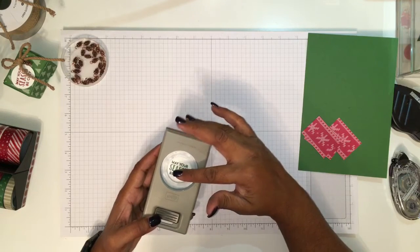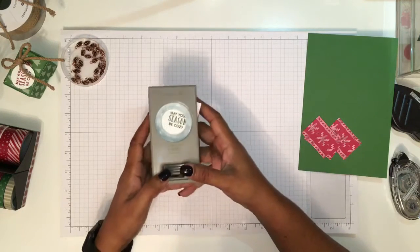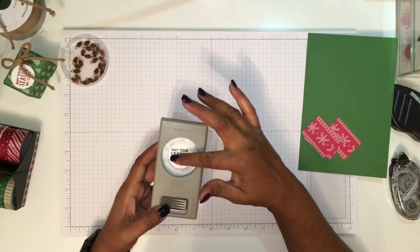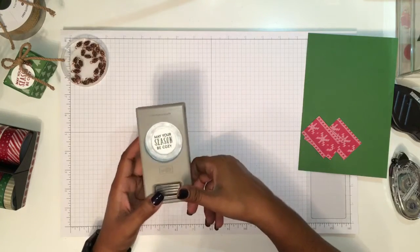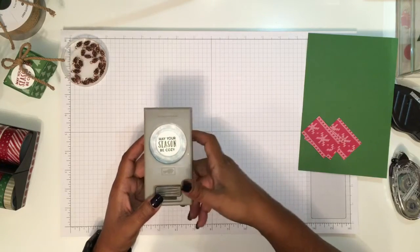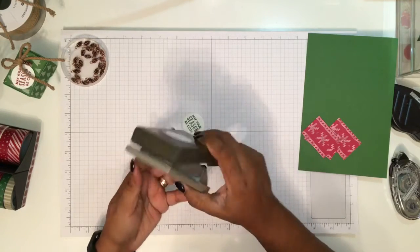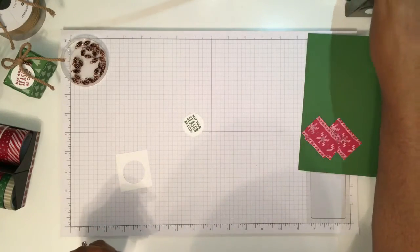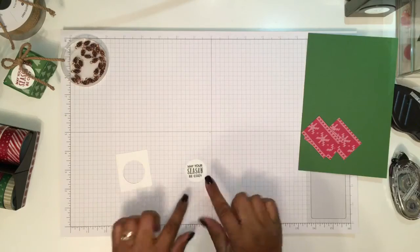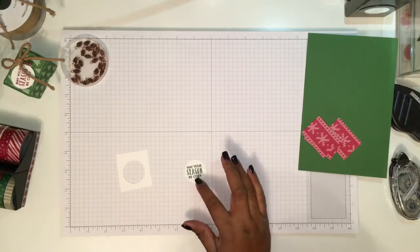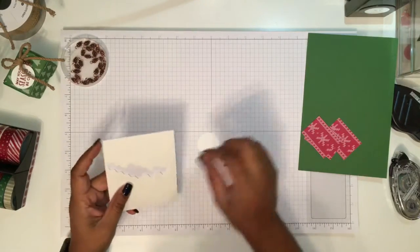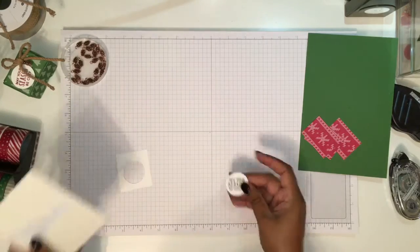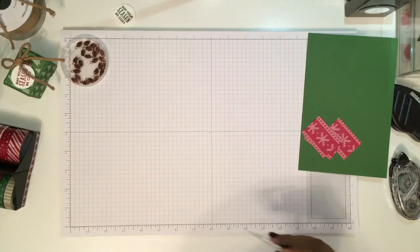I'm going to punch this - 'may your season be cozy.' I put it slightly to the right because I know I'm going to put a bow on the right side of it.